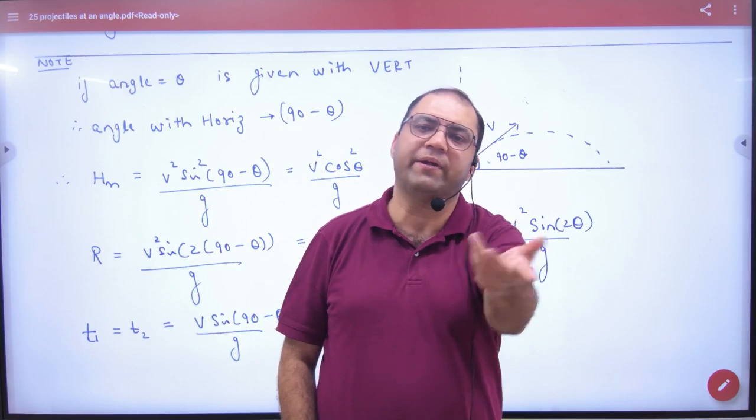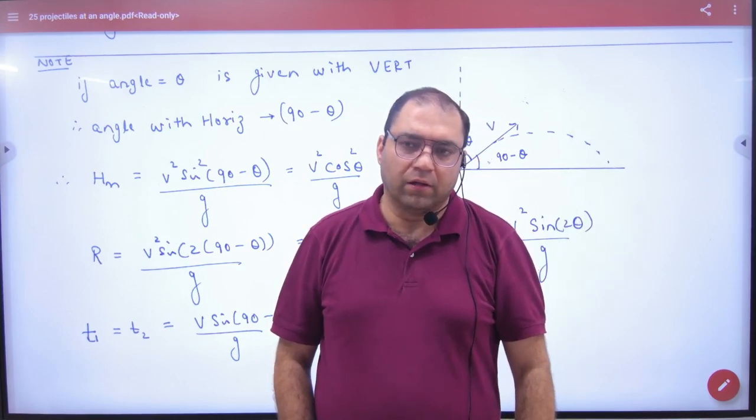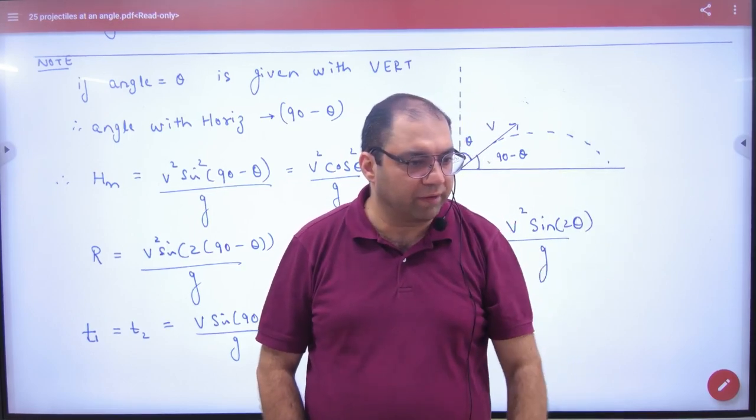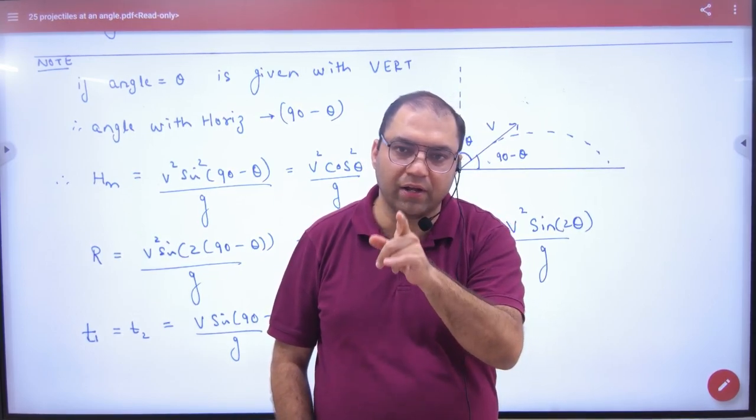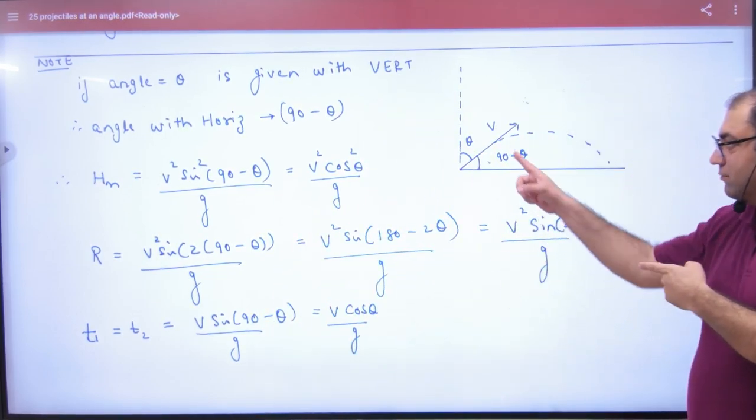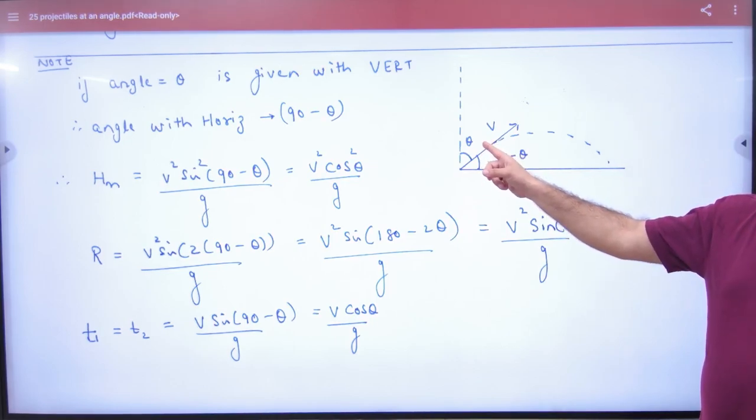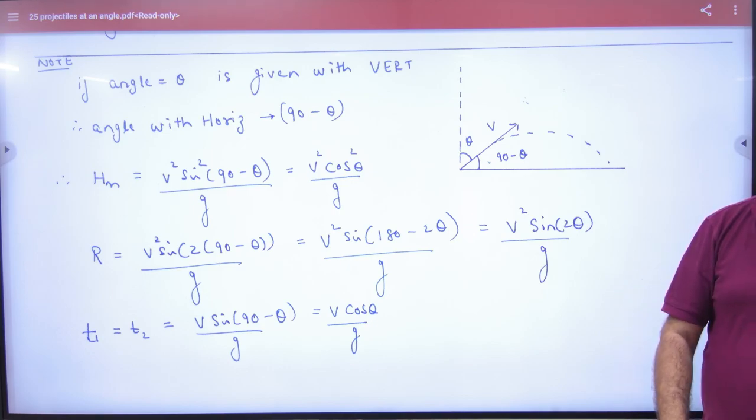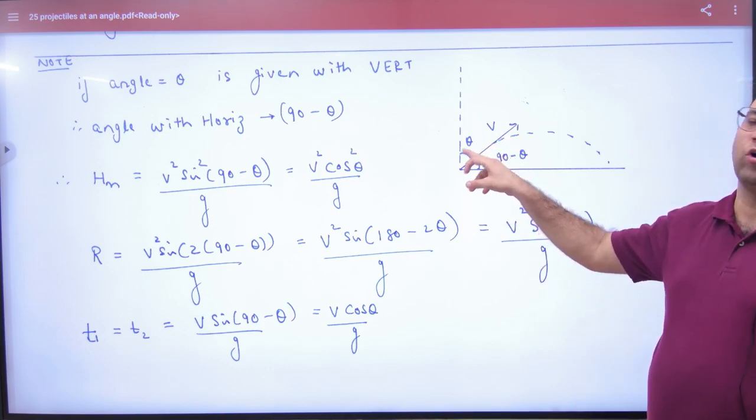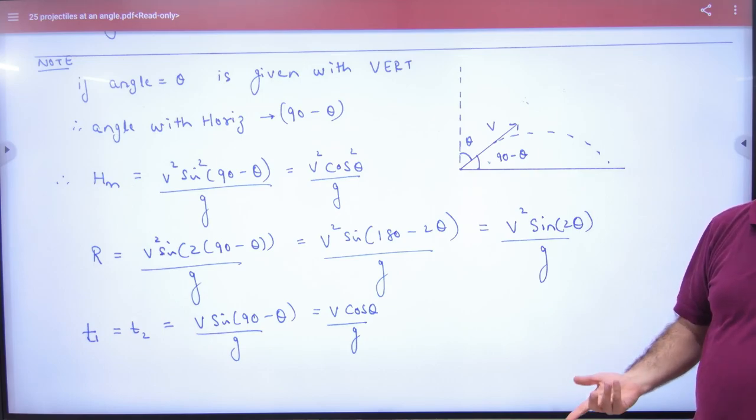It will say maximum height prove. What happens in it? This is done: V square sine square theta by 2G. And the teacher will look at it. Because you have not asked questions. He will play with vertical, and we have done all the derivations with horizontal. Now everything is wrong. Because with vertical, if the angle is theta, then with horizontal is 90 minus theta.